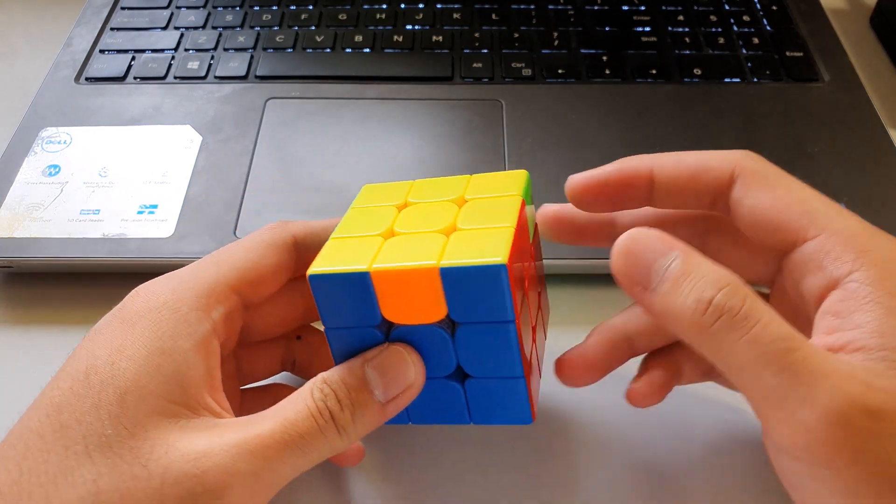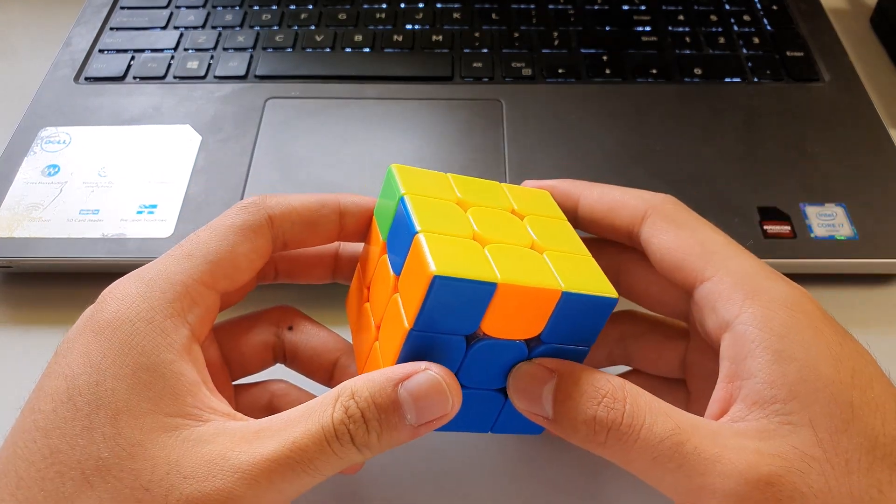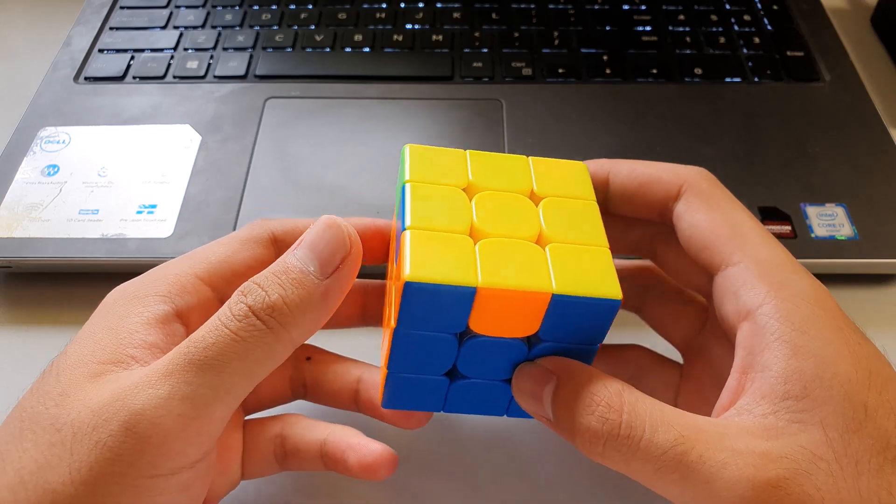And now for the RA perm, where the 2x1 bar is on the other side, you could just mirror the RB's algorithm. It goes like this.